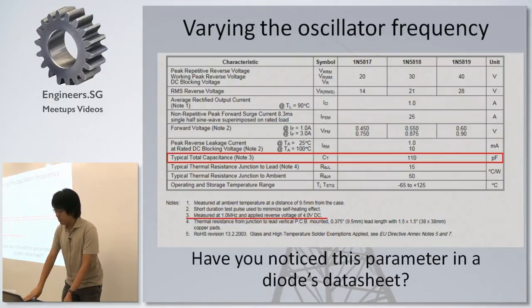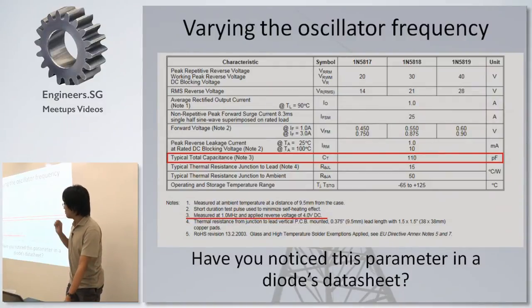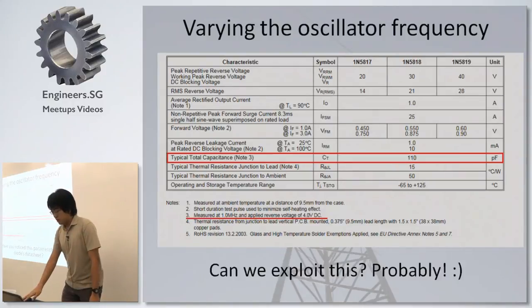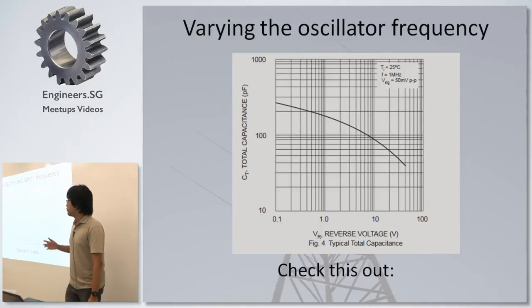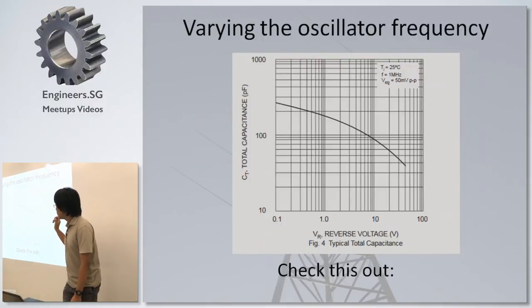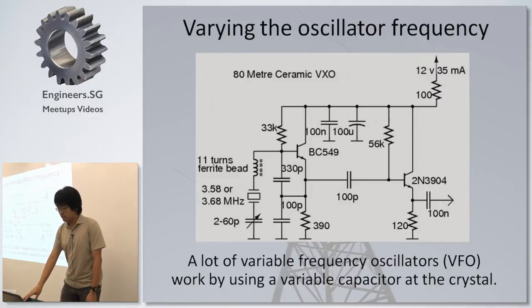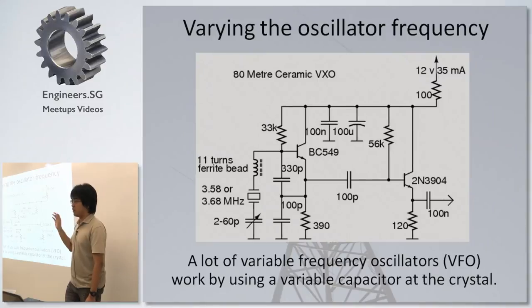I want to also vary my oscillator frequency. So I was thinking, there is a parameter called the typical total capacitance in a lot of diodes. How can we exploit this? Most of the datasheets will give you a graph, and it will say for a certain reverse voltage, I can get a certain amount of capacitance based on my voltage. So if that's the case, since a lot of oscillators, or variable frequency oscillators, they work by having a variable capacitor to pull the crystal.